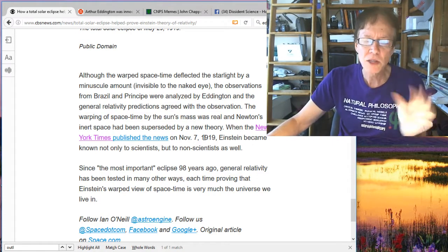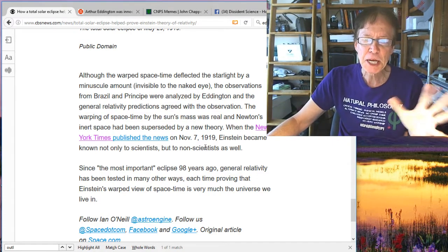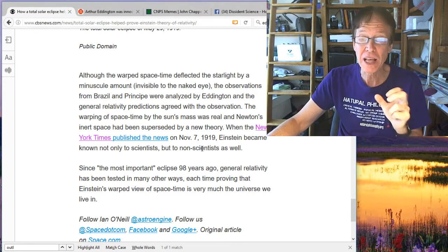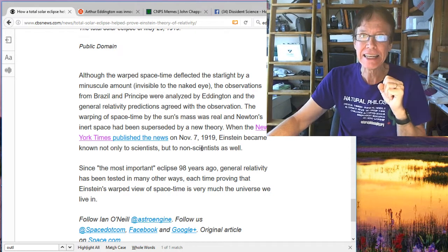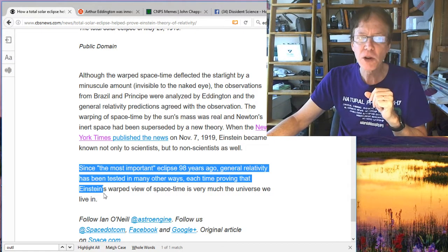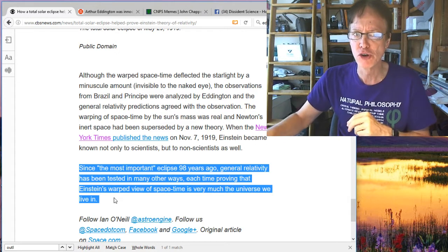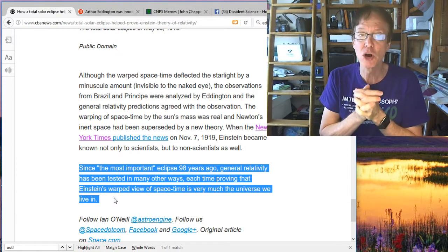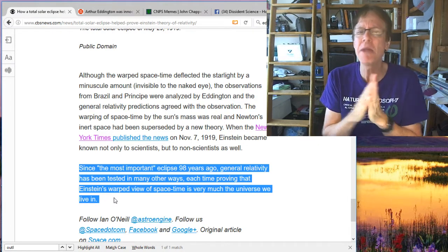Of course, what they don't tell you are some things, which is, in the 1980s, people started looking at the actual data from this experiment and realized, statistically, it did not show what it was supposed to. We'll talk about that in a second. But of course, it says, since then, most important, the most important eclipse 98 years ago, general relativity has been tested for in many other ways.